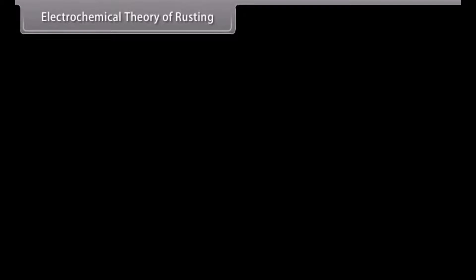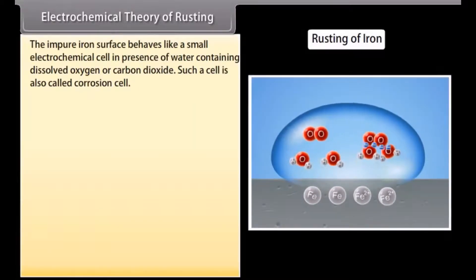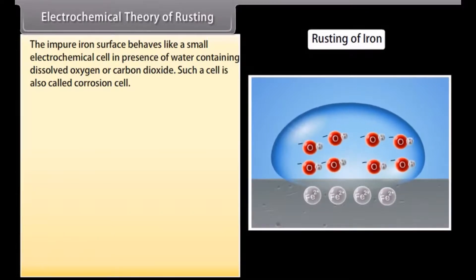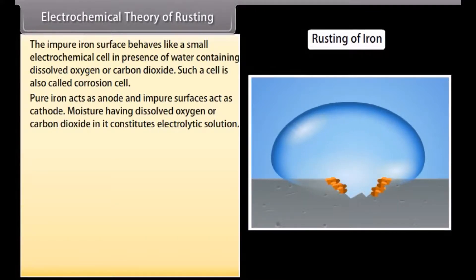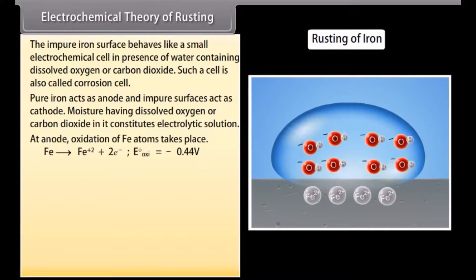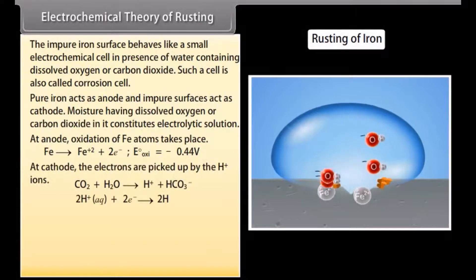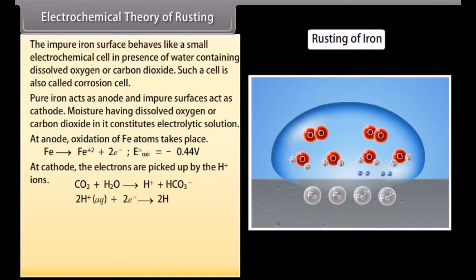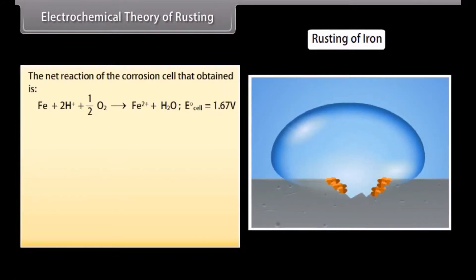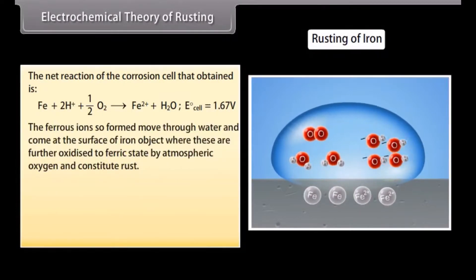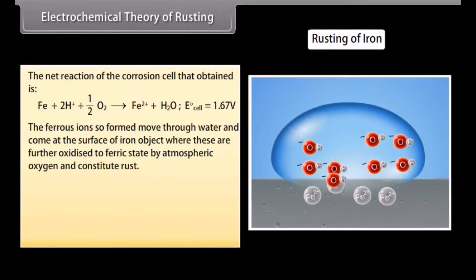Electrochemical theory of rusting. According to this theory, the impure iron surface behaves like a small electrochemical cell in presence of water containing dissolved oxygen or carbon dioxide. Such a cell is also called corrosion cell. Pure iron acts as anode and impure surfaces act as cathode. Moisture having dissolved oxygen or carbon dioxide in it constitutes electrolytic solution. At anode, oxidation of iron atoms take place. At cathode, the electrons are picked up by H plus ions. The hydrogen atoms reduce the dissolved oxygen. The ferrous ions so formed move through water and come at the surface of iron object where these are further oxidized to ferric state by atmospheric oxygen and constitute rust.